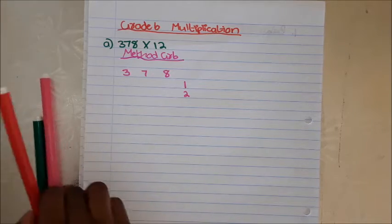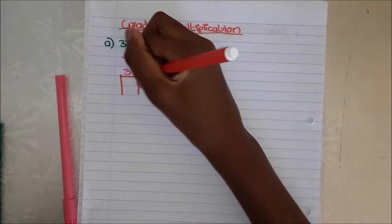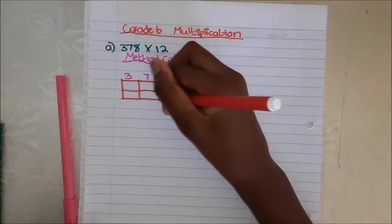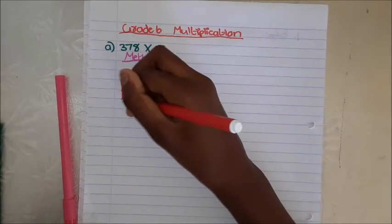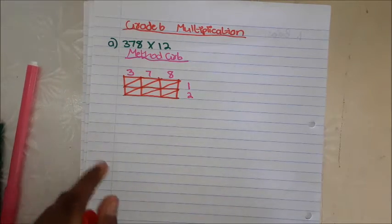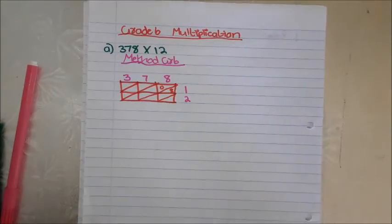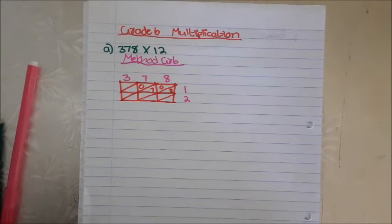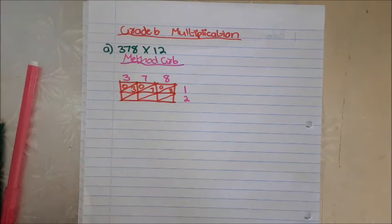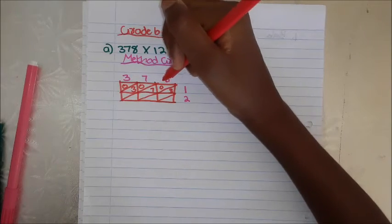I'm going to take a different color — red — and draw the blocks like this. Sorry for not using a ruler but I'm really trying here. Now let's multiply. 8 times 1 is 8. 7 times 1 is 7. If we times a number by 1 it remains the same, but the top block remains 0.